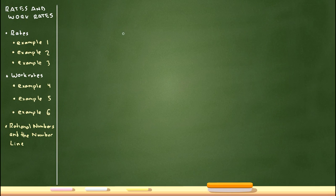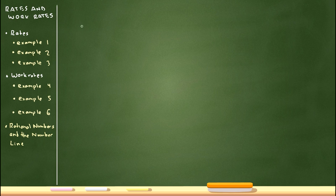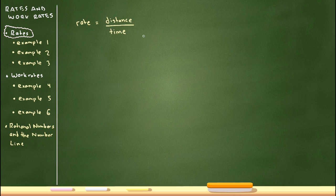In this video we're going to be talking about rates and work rates. We have six examples for rates and work rates, and then we're going to talk about rational numbers and the number line. This comes about because we're going to be working with a lot of fractions through these rate and work rate problems. To begin: what is a rate? Rate is defined to be distance divided by time, abbreviated as r = d/t.